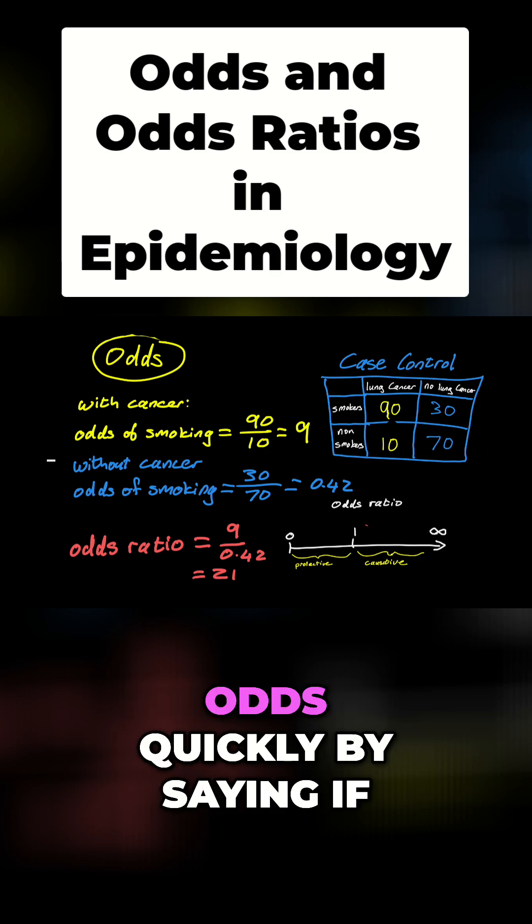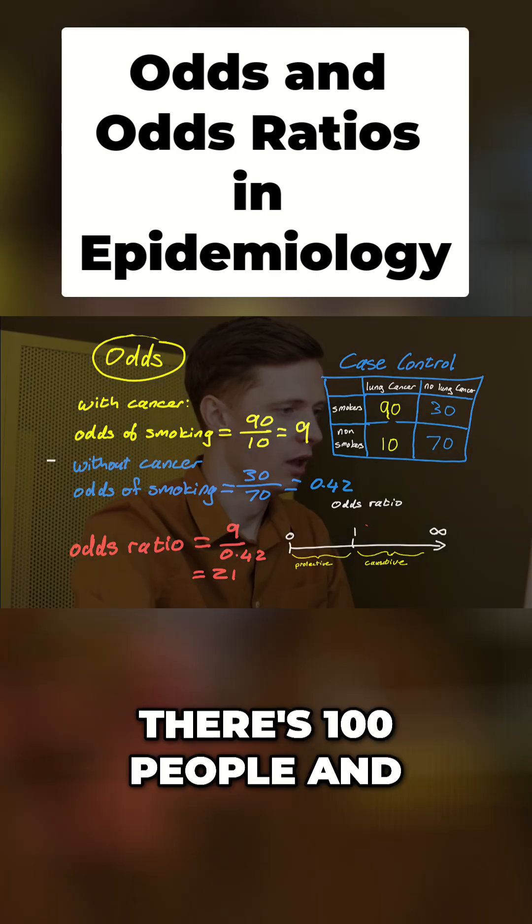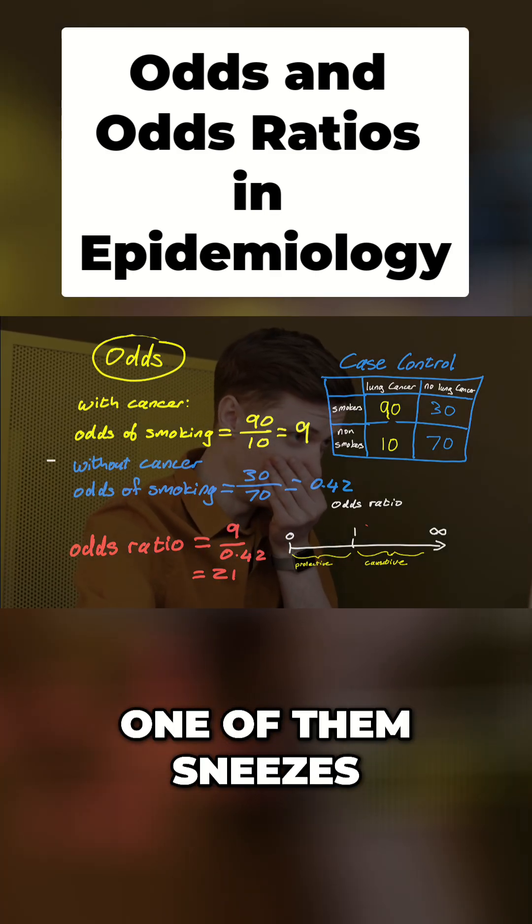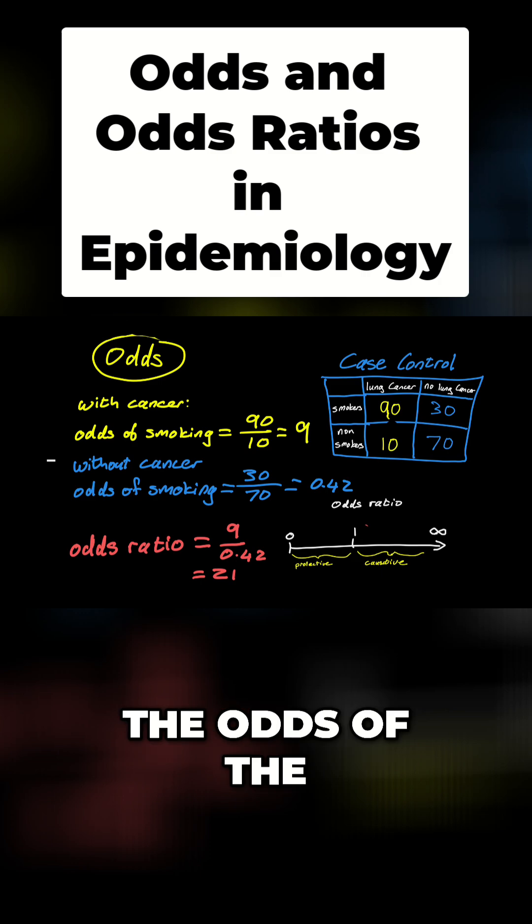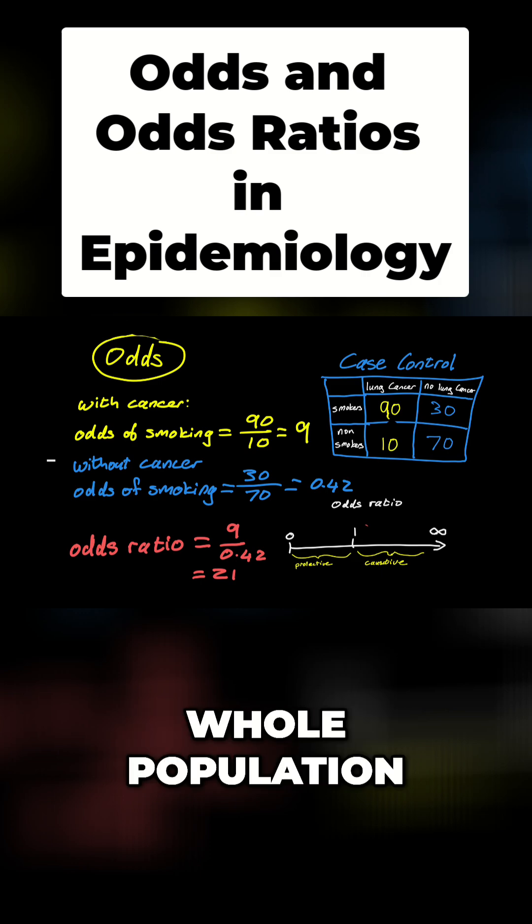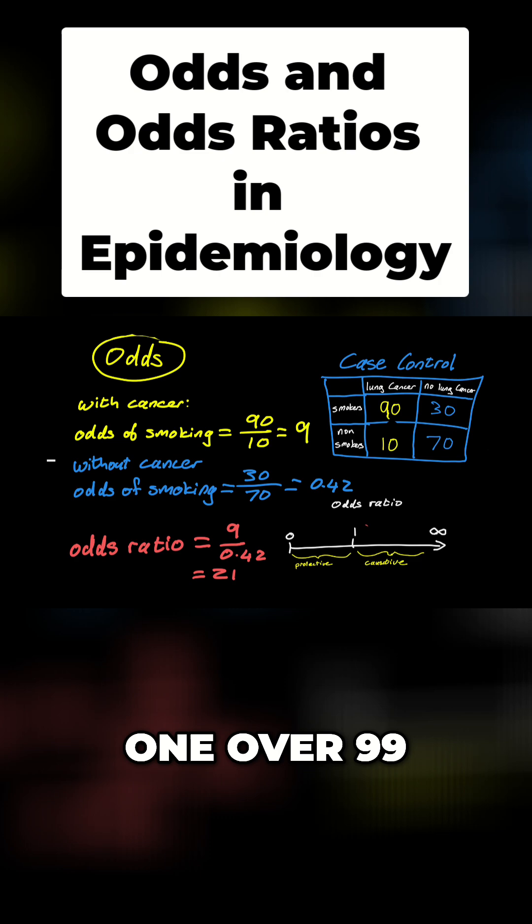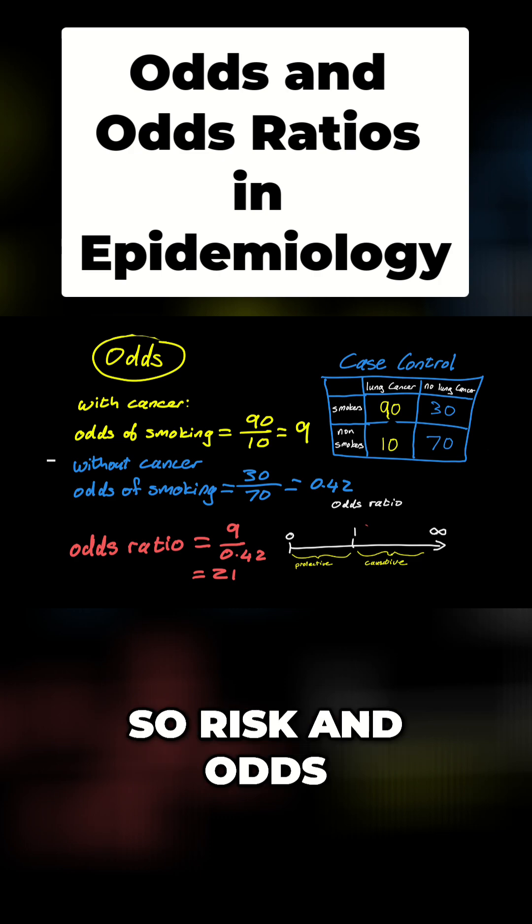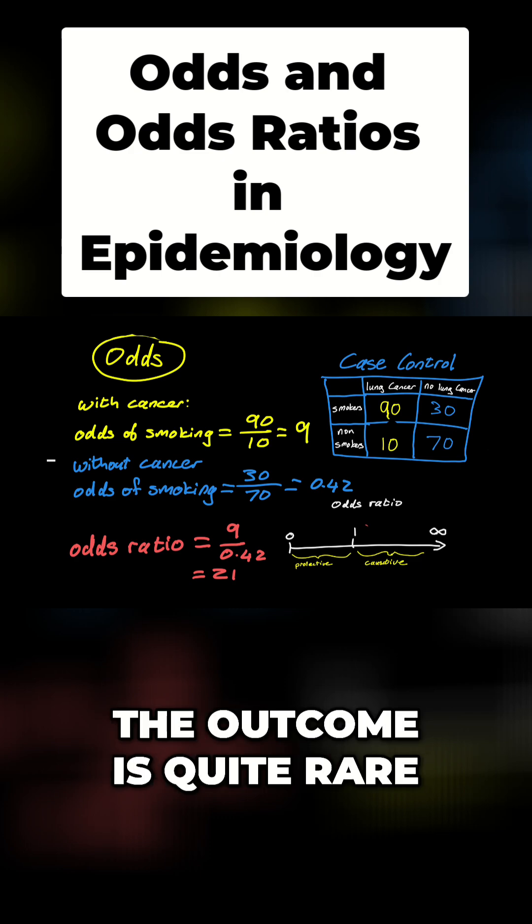Let me illustrate the difference between risk and odds. If there's a hundred people and one of them sneezes, the risk of sneezing is one over a hundred - the whole population. The odds would be one over 99. So risk and odds are very similar when the outcome is quite rare.